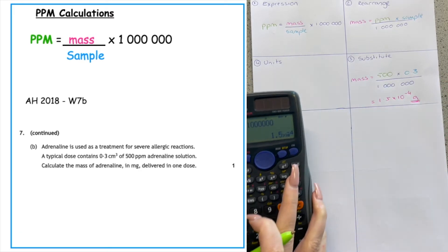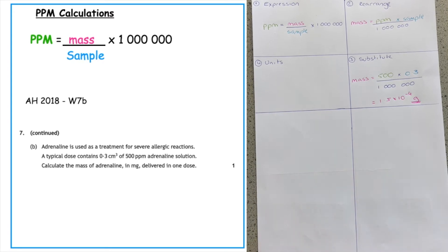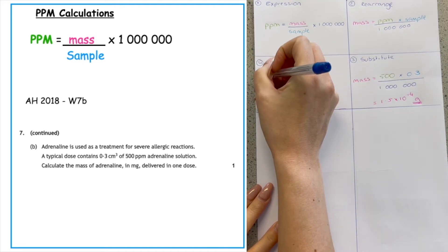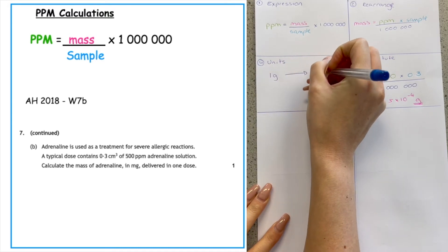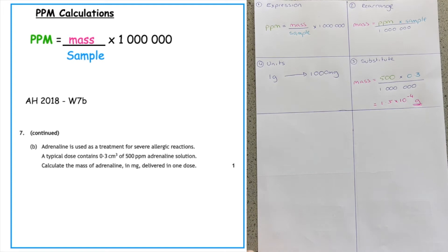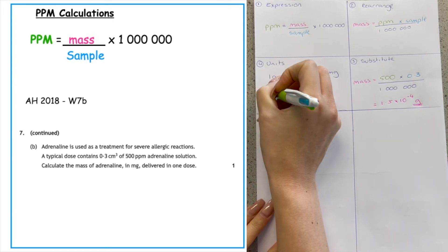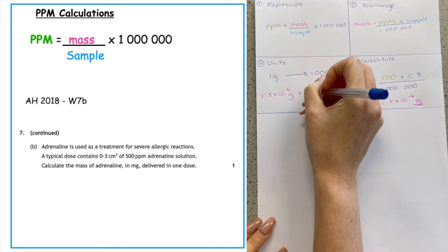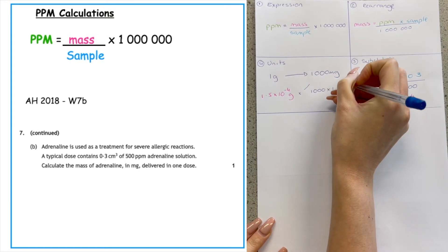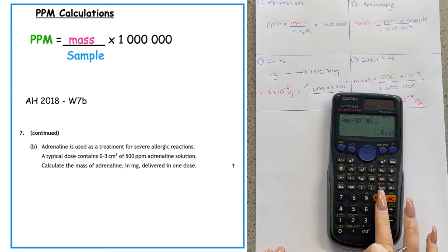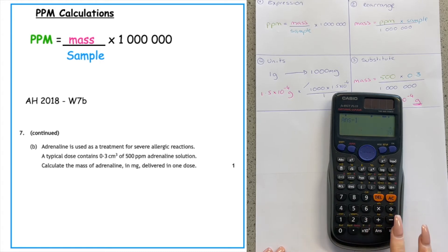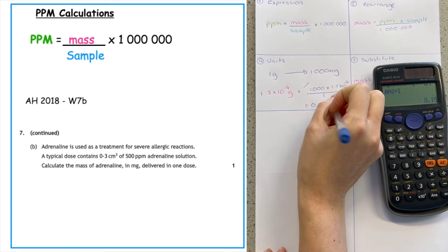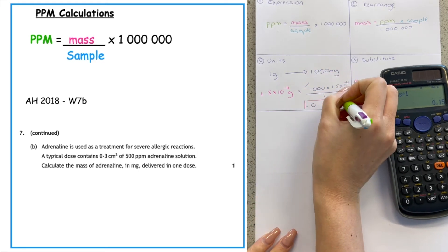We always measure mass in grams, however the question specifically requests milligrams. So I need to do my unit conversion: one gram is equal to one thousand milligrams. My number is 1.5 times ten to the minus four grams. Cross multiplying: one thousand times 1.5 times ten to the minus four, all over one. That gives my final answer as 0.15 milligrams.